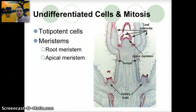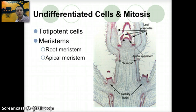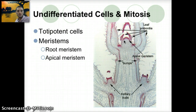Now we get into the more specific topics for Section 9.3. We want to look at undifferentiated cells and mitosis. Totipotent cells — many plant cells, including fully differentiated plant cells — have the capacity to generate whole parts. The plant typically grows in a root meristem or an apical meristem. Growth is confined to meristem regions, which are composed of undifferentiated cells undergoing active cell division. These cells divide by mitosis, causing the plant to grow in these different regions.